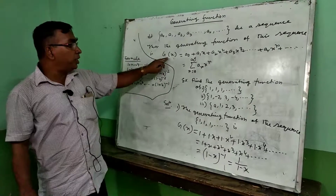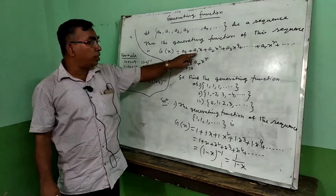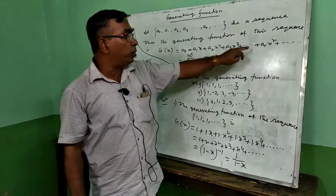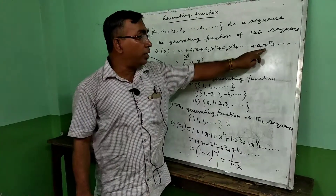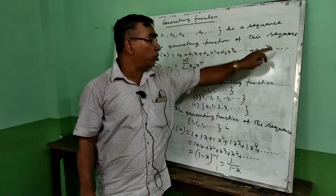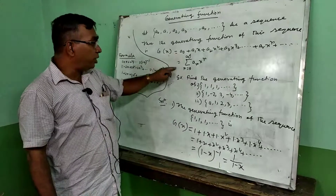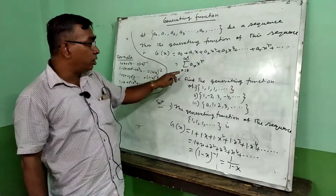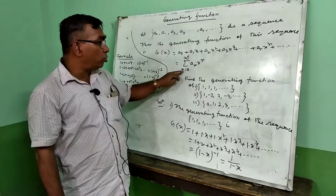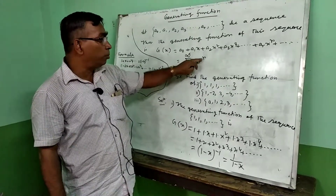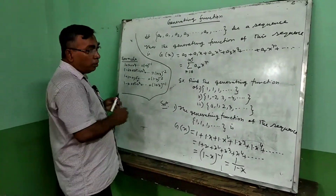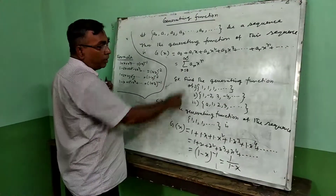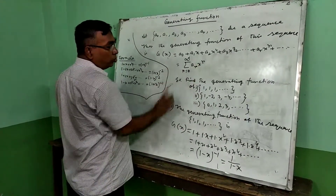You can also write g(z) equal to a0 plus a1*z plus a2*z² plus a3*z³ plus ... plus ar*z^r plus ... So this can be written in sigma notation as the sum from r equal to 0 to infinity of ar*x^r. If we put r equal to 0, the first term is a0, since x to the power 0 is 1.